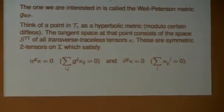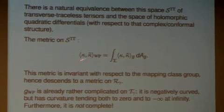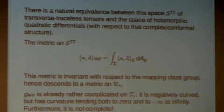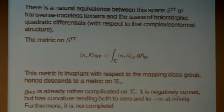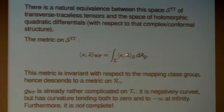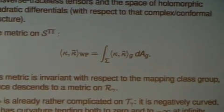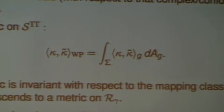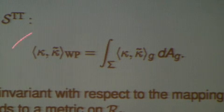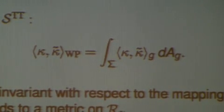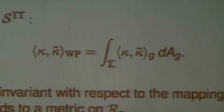What you do is: you have two tensors of this sort, which represent infinitesimal ways of pushing one hyperbolic metric toward another hyperbolic metric. Something that looks like an L^2 inner product — you take these two tensors, which are just tensors on your surface sigma, take their pointwise inner product with respect to the hyperbolic metric that you have, and integrate that over the surface. That's a number. That's the Weil-Petersson metric.